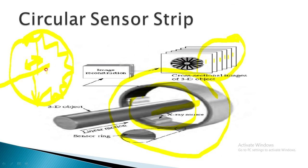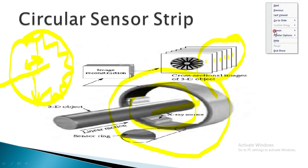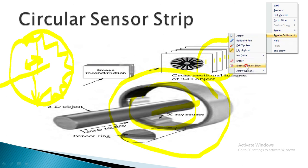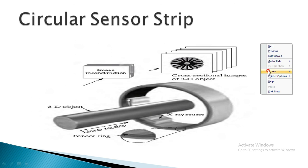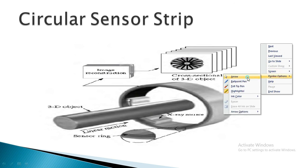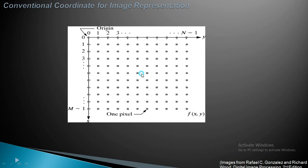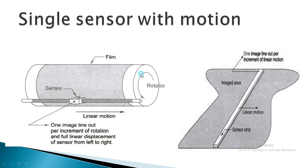The rod that you can see here — on this, an object will be lying, and that object is nothing but the patient. This is all regarding your circular sensor strip. The difference between your single sensor and the circular sensor is that the single sensor generates 2D images and the circular sensor generates 3D images.